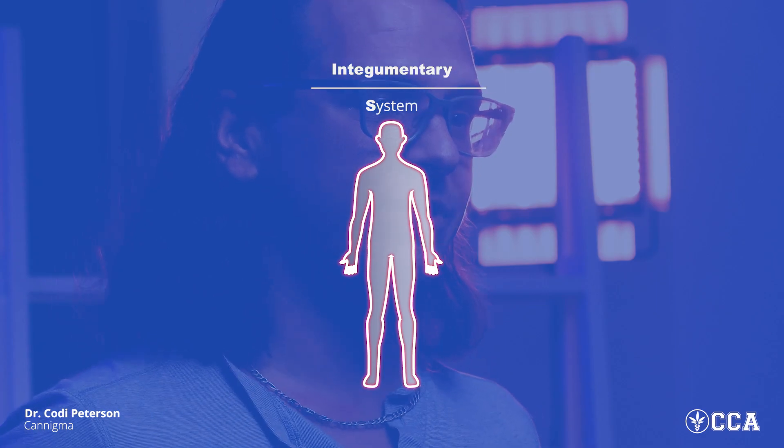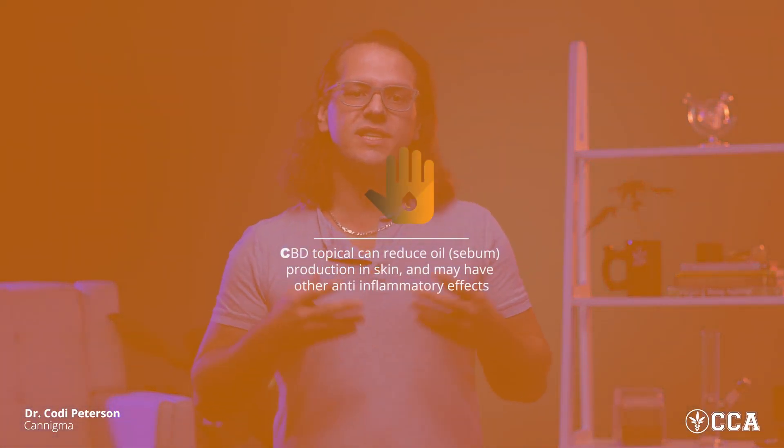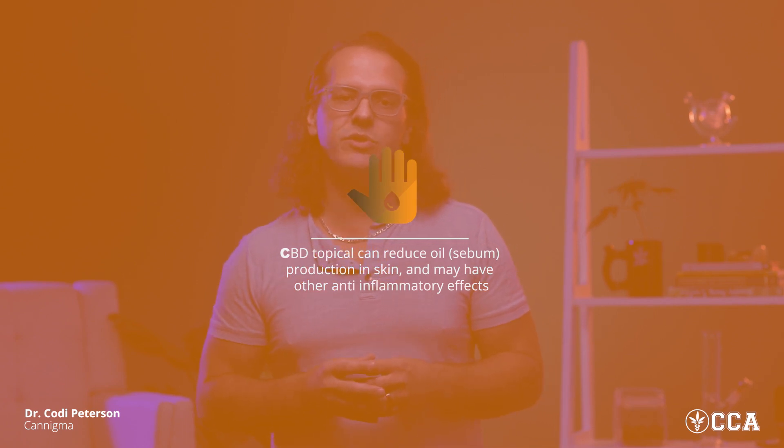Moving on to the integumentary system — our hair, skin, and nails — designed to protect us from the sun and damaging rays. CB receptors can be found on the skin, but deeper than most topical cannabis products will penetrate. There are also cannabinoid receptors throughout the nerves in the skin and within the sweat glands and oil glands. The endocannabinoid system is responsible for all sorts of functions in the skin.